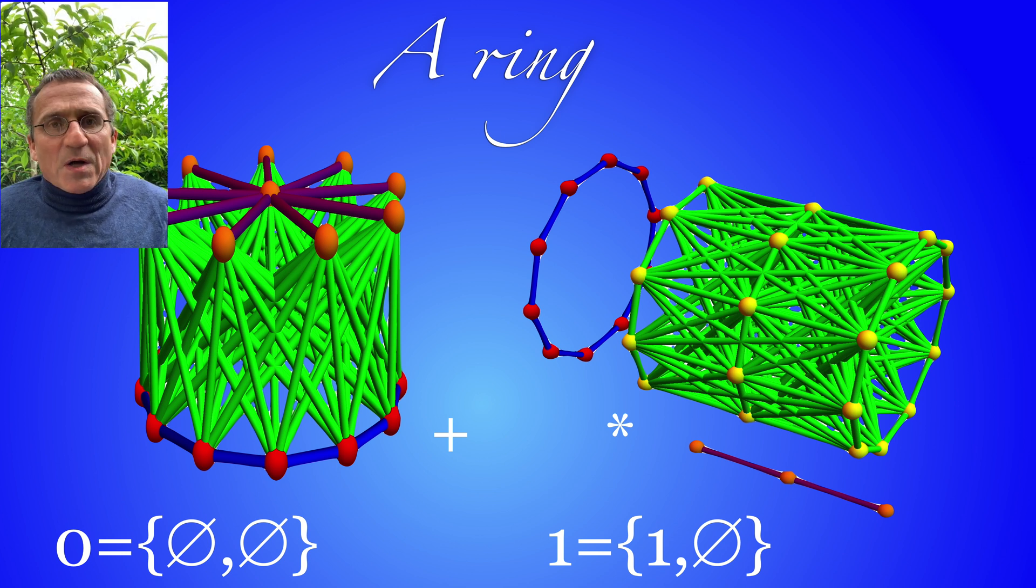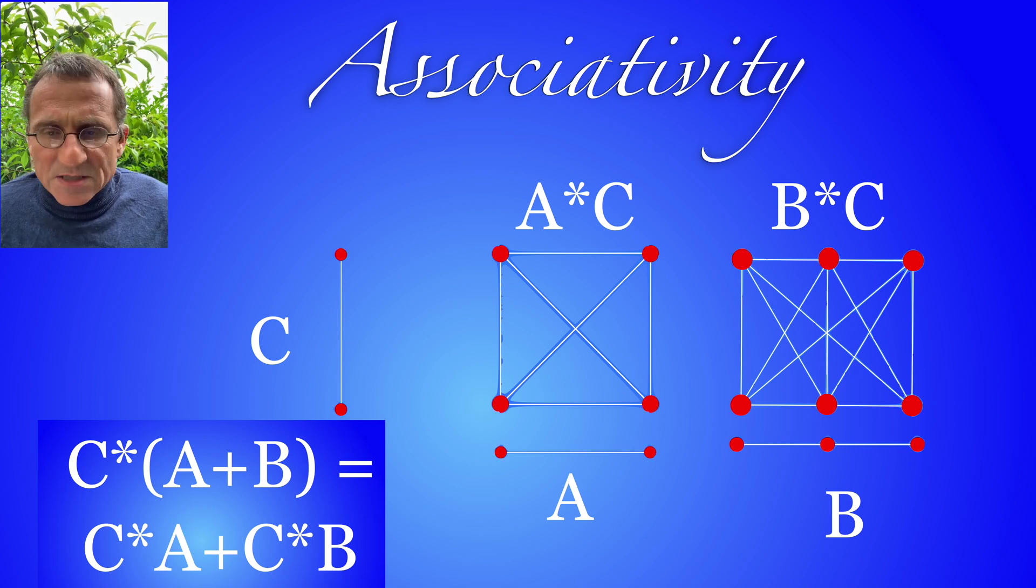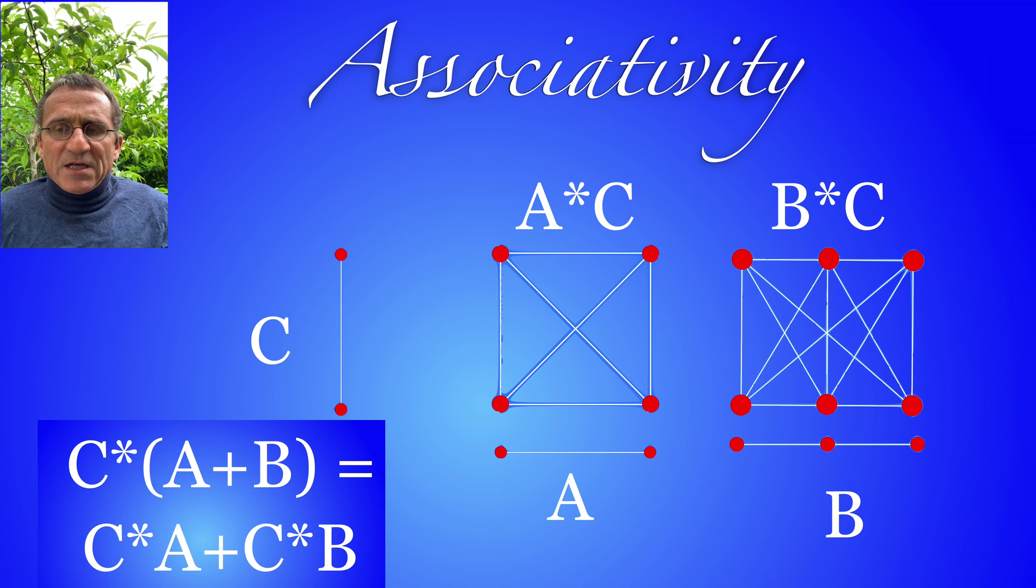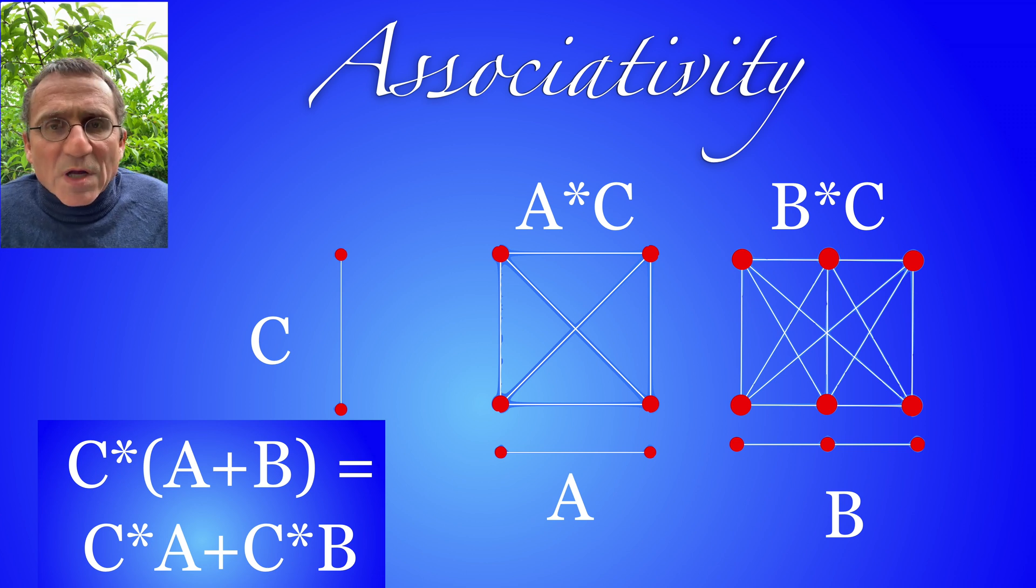So having an addition and multiplication produces a ring, but we need associativity and the associativity can be quickly seen. If you add a and b we take the disjoint union and connect any pair of vertices from a to b. When we take the sum of a times c and b times c, then we do the analog connections of the product so that c times (a plus b) is c*a plus c*b.